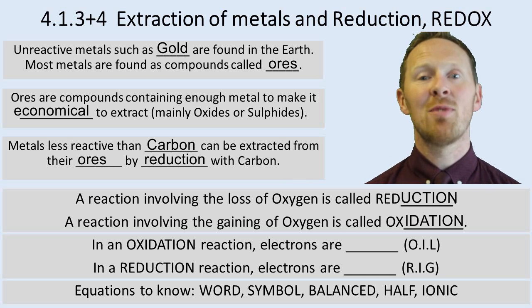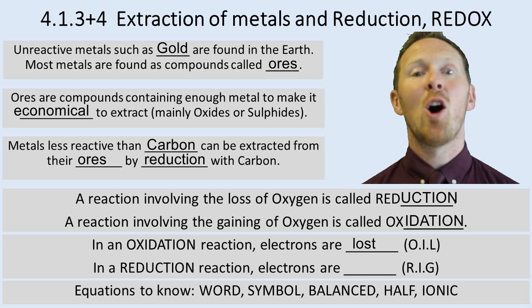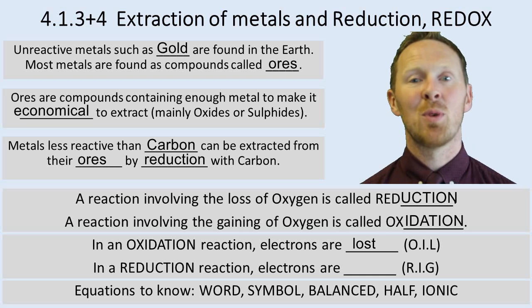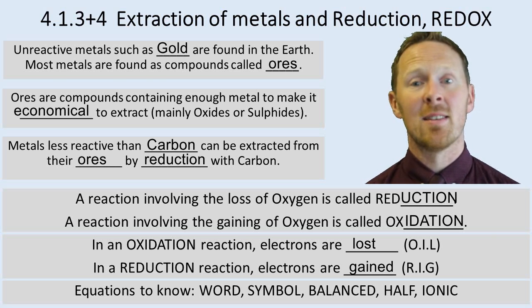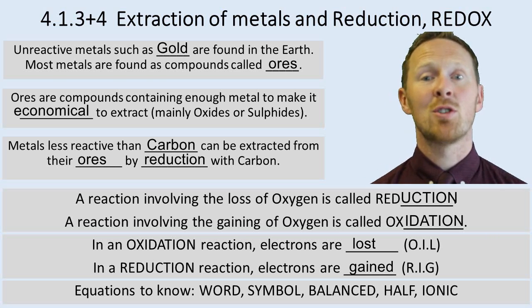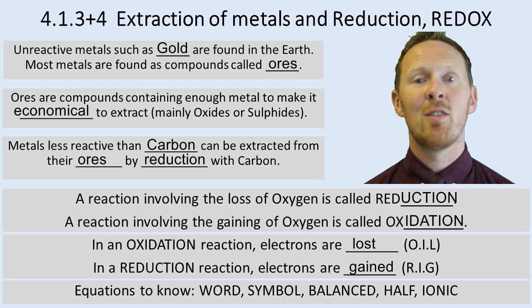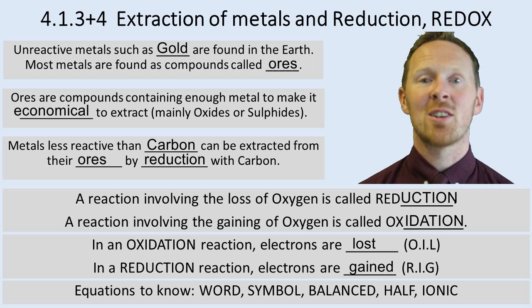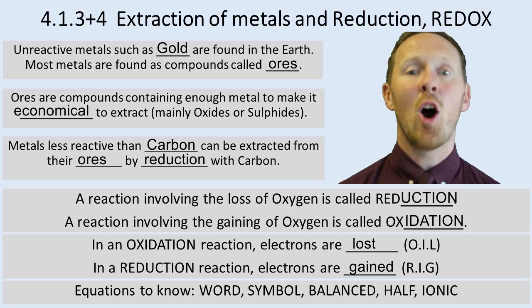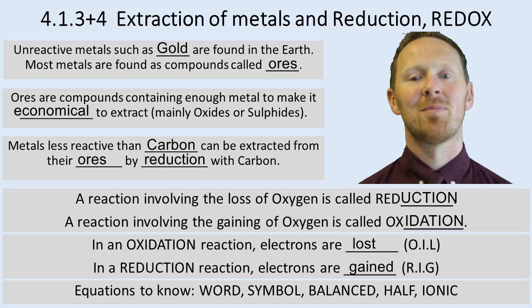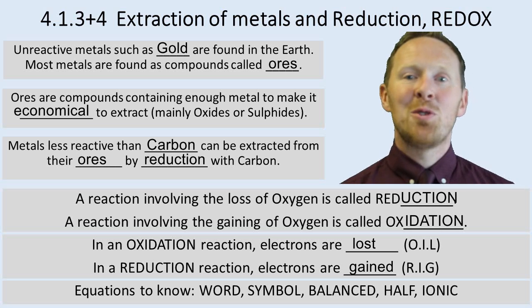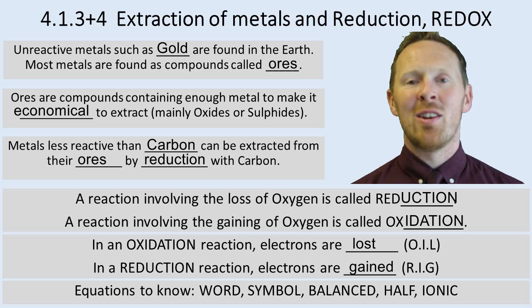In an oxidation reaction, electrons are lost — we call that OIL: oxidation is loss of electrons. In a reduction reaction, electrons are gained — we call that RIG: reduction is gain of electrons. Putting them together, redox reactions can be remembered by the acronym OIL RIG: oxidation is loss, reduction is gain of electrons.